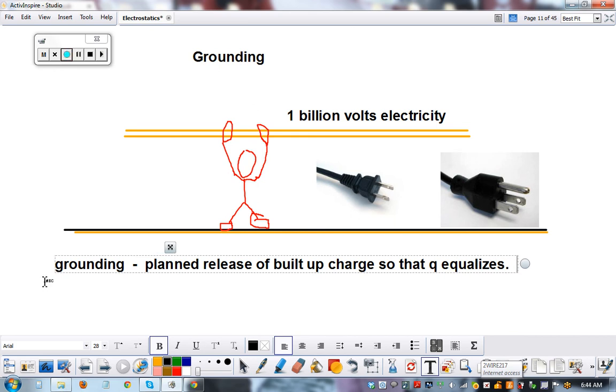This is what happens with lightning. It's just charges building up in a cloud and it's grounded and the charge is gone and we don't have any more lightning, at least until more builds up.